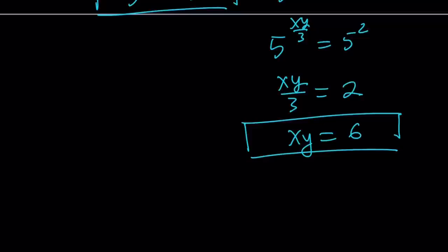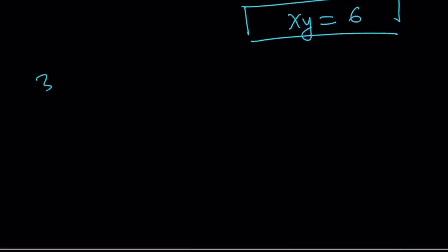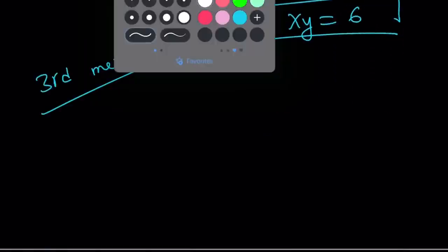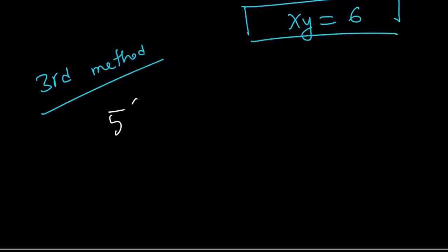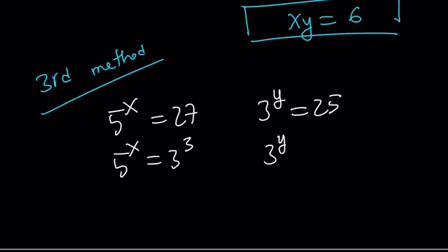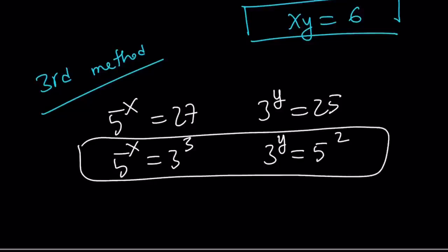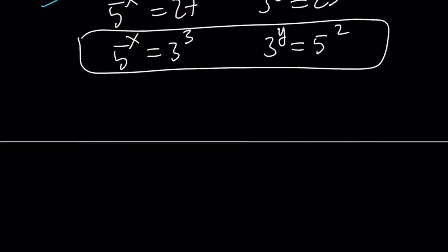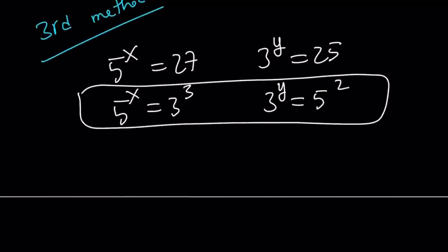So that is the second method. Let's go ahead and talk about a third approach, which you can call third method if you want. And this is what it looks like. So 5 to the x is 27. 3 to the y is 25. So now, the first one I was able to write as 3 to the third. And this one I was able to write as 3 to the y equals 5 squared. So kind of look at these two equations. Wouldn't that be nice if I was able to isolate one of them and kind of plug it in or substitute? So here's what we can do.